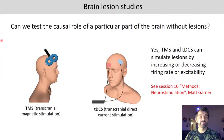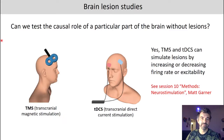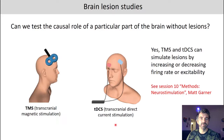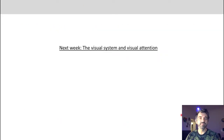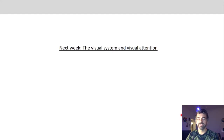Is there another way to test the causal role of a particular brain area without lesions? Yes — we can simulate lesions by increasing or decreasing the firing rate or excitability of a brain region, for example with TMS or tDCS. You will learn more about that in session 10 on neurostimulation. That concludes our discussion of fMRI imaging studies and brain lesion studies — thank you for your attention, and tune in next week when we will talk about the visual system and visual attention.